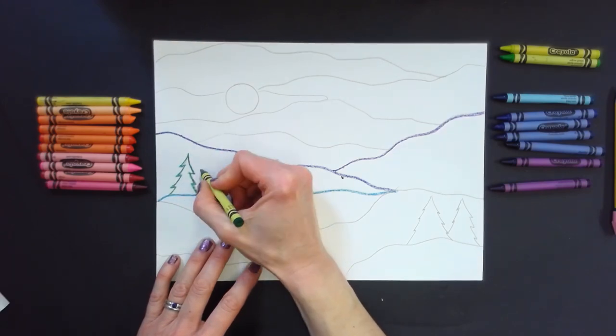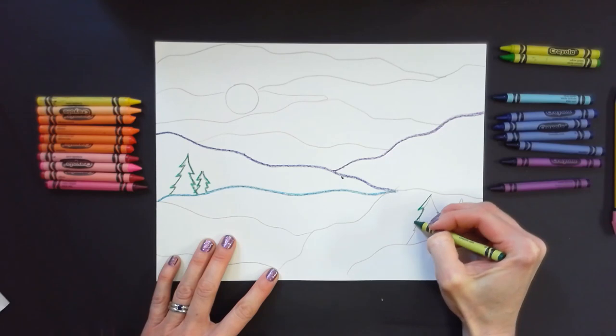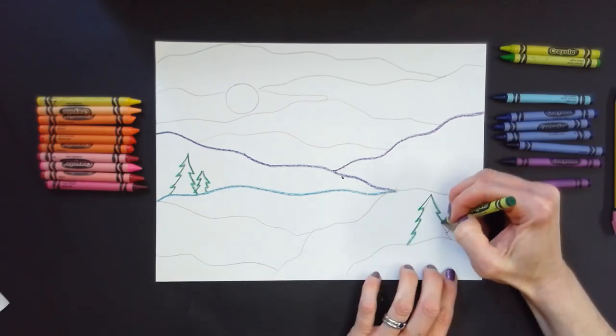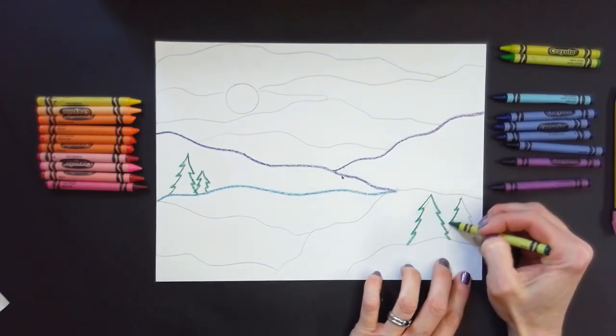Finally, use different colors of crayons to trace your lines. Consider using cool colors in the land and warm colors in the sky.